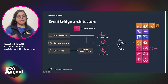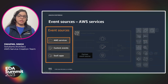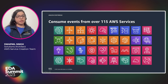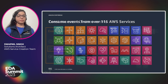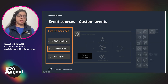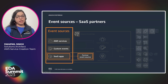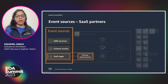Looking at the EventBridge architecture, event sources are on the left. Many AWS services integrate with EventBridge — 115 AWS services already integrate with it. There is also a concept of custom events: you can create your own business events, integrate them with EventBridge, and fan out to multiple targets. You can also integrate SaaS applications with EventBridge by creating an event bus and a partner event source, providing a logical connection between the partner system and your AWS account.